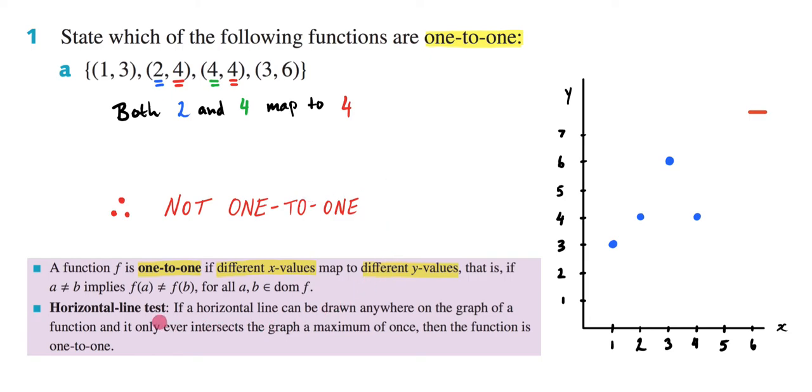Another way I could prove this is by using the horizontal line test, which tells me if a horizontal line can be drawn anywhere on the graph of a function, and it only ever intersects the graph a maximum of once, then the function is one-to-one.